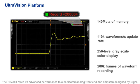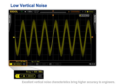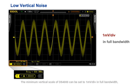The DS4000 owes its advanced performance to a dedicated analog front end and chipset designed by Rigol. Excellent vertical noise characteristics bring higher accuracy to engineers. The minimum vertical scale of the DS4000 can be set to 1 mV per division in full bandwidth, which makes measuring smaller signal details much easier.